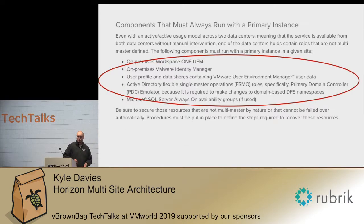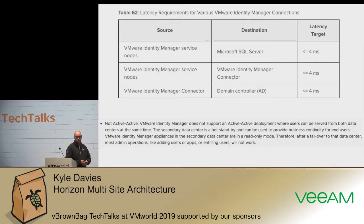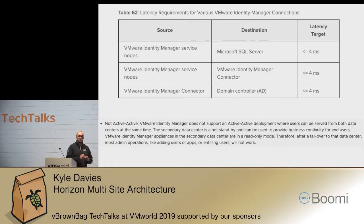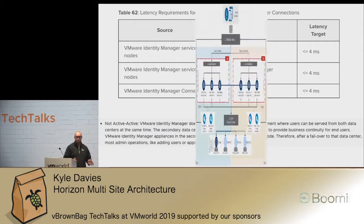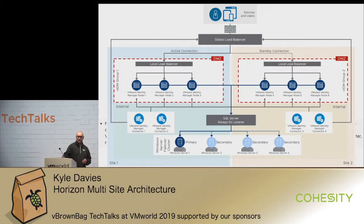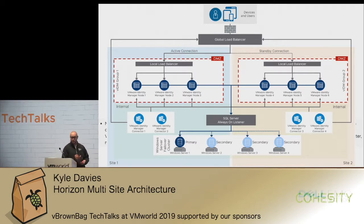Components that must run in a primary instance: UEM and Identity Manager don't support active-active state — they're simply not supported. Identity Manager requires less than 4ms latency if you want to have them geographically separated, but even then only as active-standby, not active-active. You have to do an active-standby deployment and let the SQL database fail over on the back end, with your load balancer failing you over between pod A and pod B.